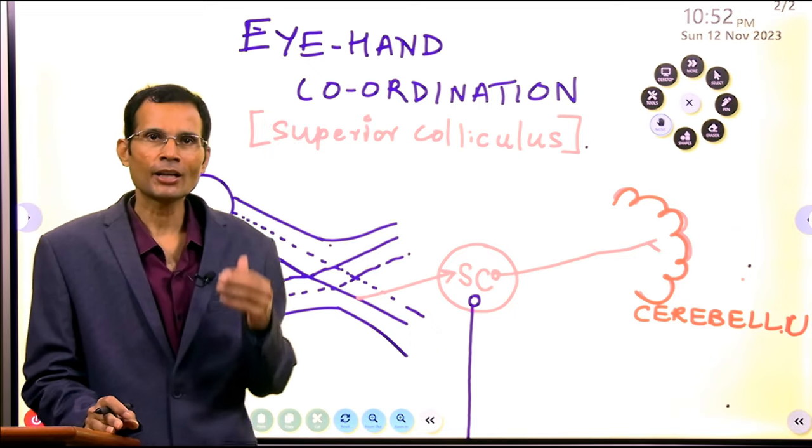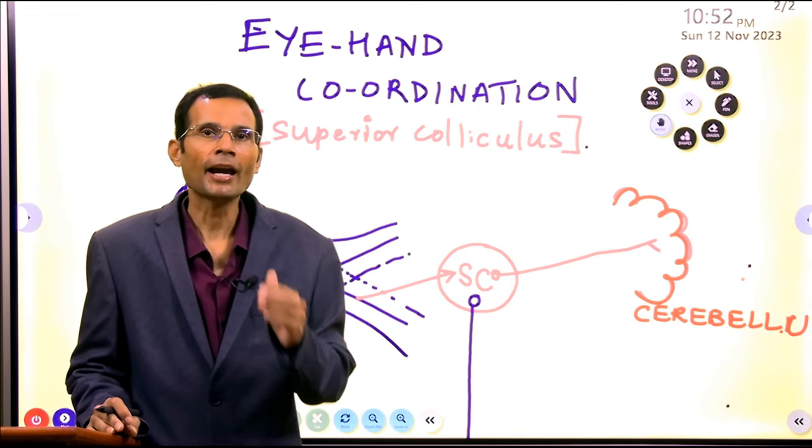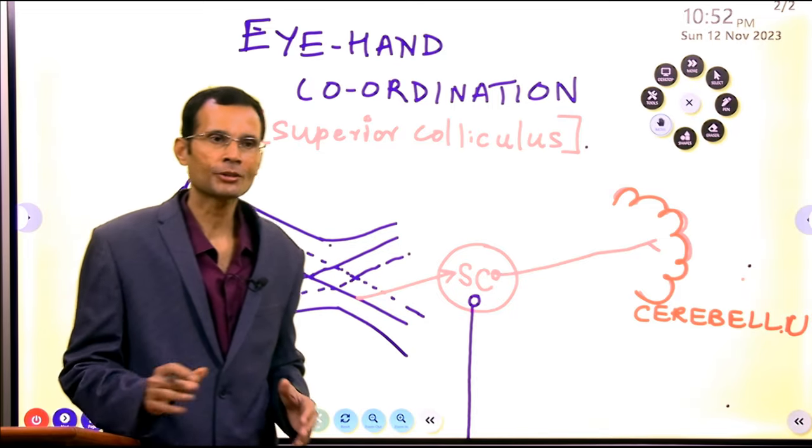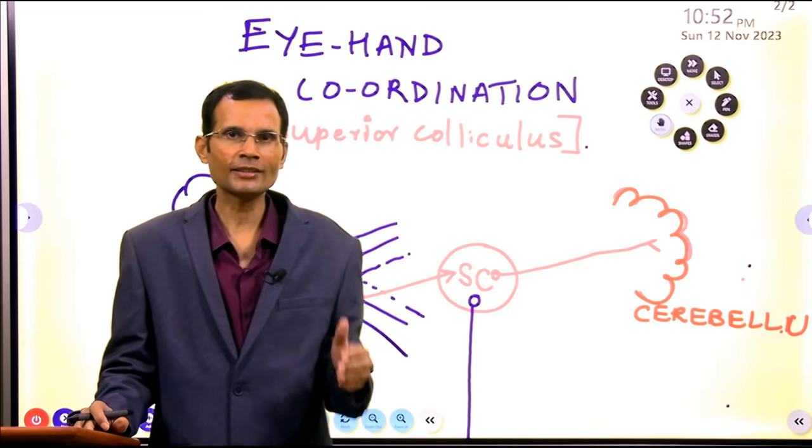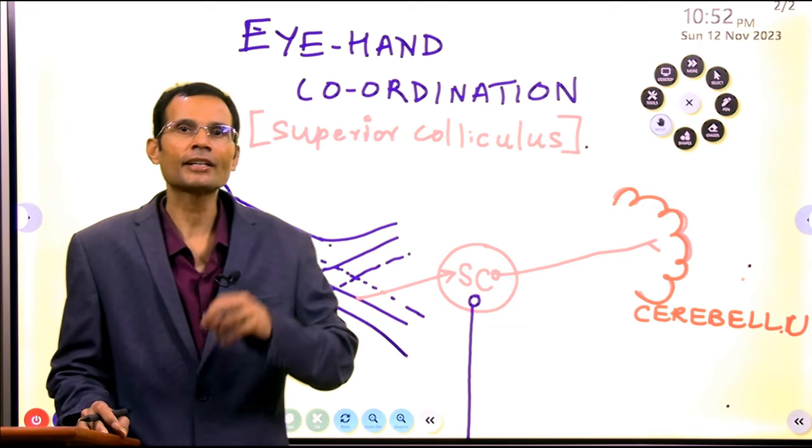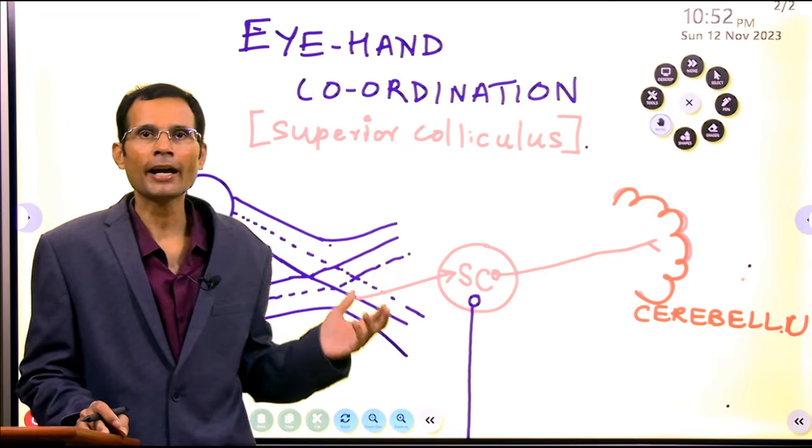But one thing that must have helped him was the eye-hand coordination or some people call it hand-eye coordination. So let's discuss the physiology of this eye-hand coordination. What is the neural circuitry involved in the eye-hand coordination?